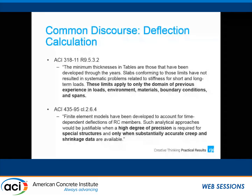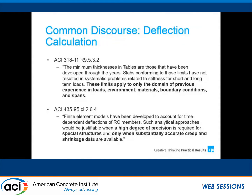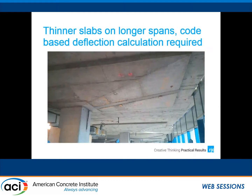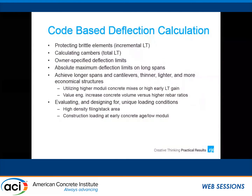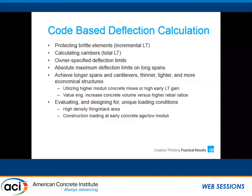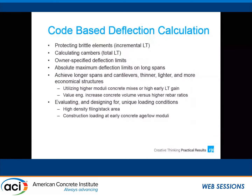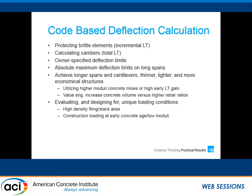If you move to ACI 435 and want to calculate deflections, there are often warnings about the variability of creep and shrinkage data and the inability to accurately calculate deflections. But the basis of our presentation is that the reality of our profession — as we design structures that span larger and are more efficient — is that we do need to calculate real slab deflections. Some reasons for this include protecting brittle elements by calculating incremental long-term deflection, and calculating total long-term deflection so we can accurately specify cambers rather than relying on general notes, as Dylan spoke about.